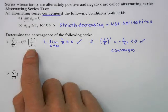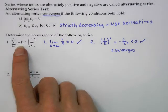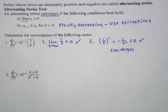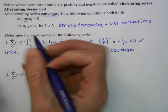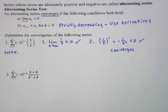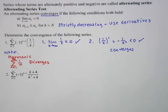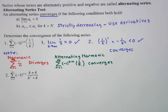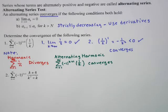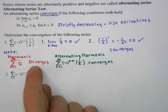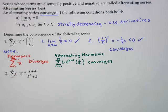An important note: 1/k is the harmonic series, and that diverges. What we just showed is that if we make it an alternating harmonic series, it converges. So the harmonic series Σ1/n diverges, but the alternating harmonic series with the alternating piece 1/k is always convergent. We're going to use this a lot in the next unit.